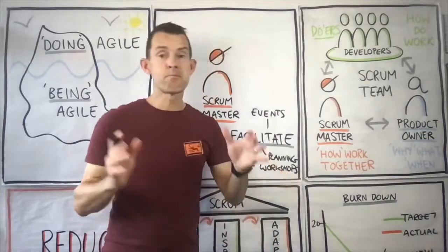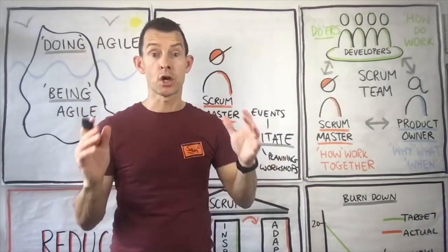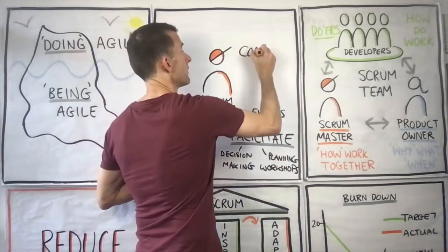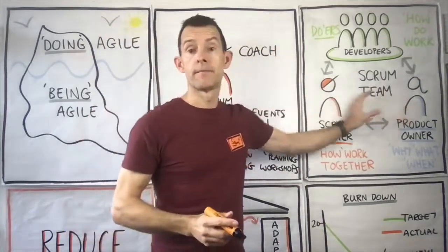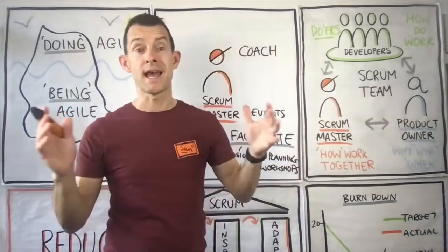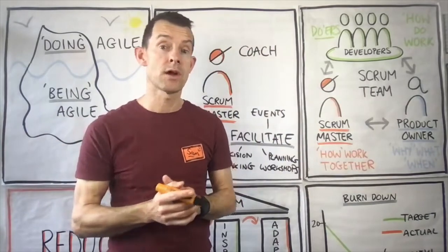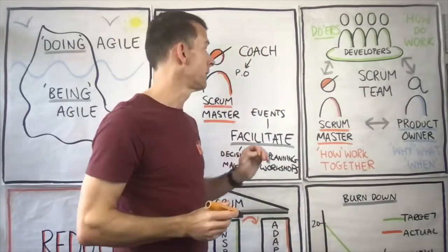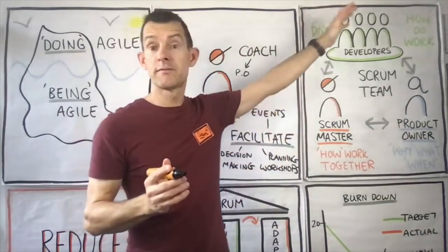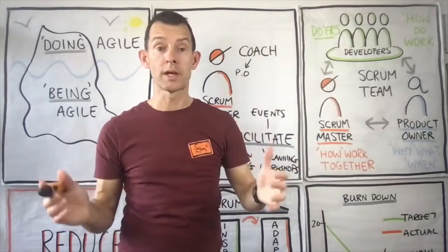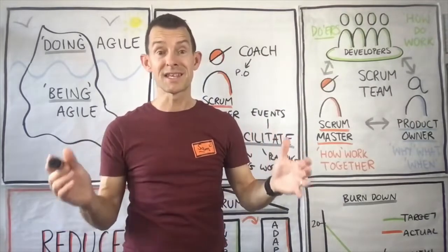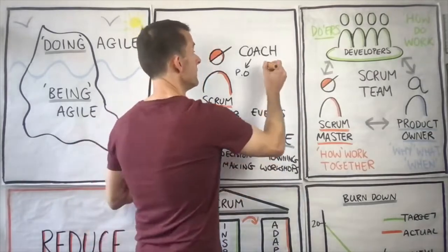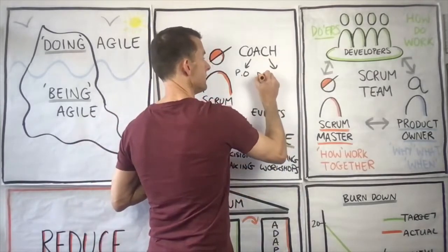The second big part of this job is to coach — to coach the Scrum team. The Scrum Master coaches the Product Owner on how to work more effectively in Scrum. Secondly, they coach the developers in how to work well in Scrum, how to work together, how to be self-managing, and to leverage the fact that they're cross-functional.